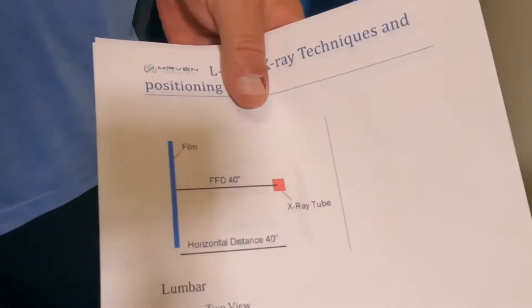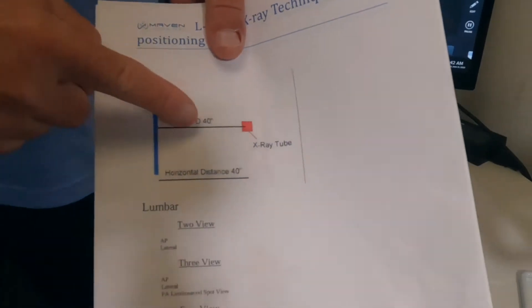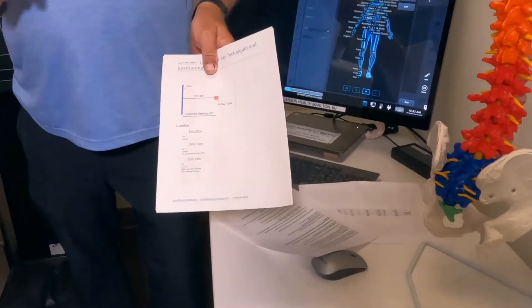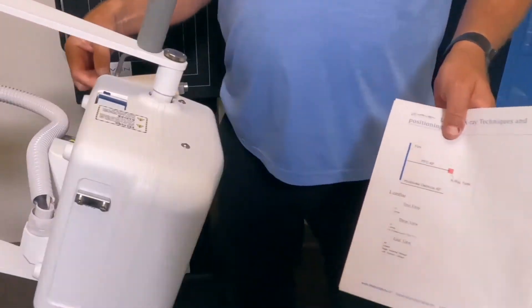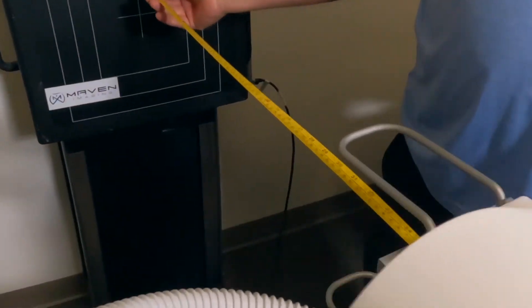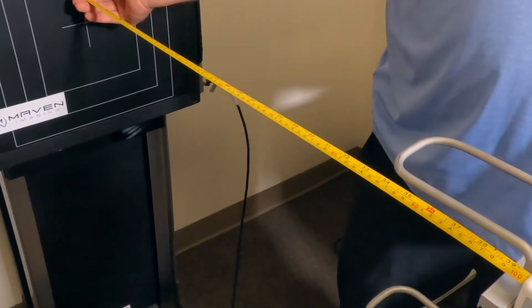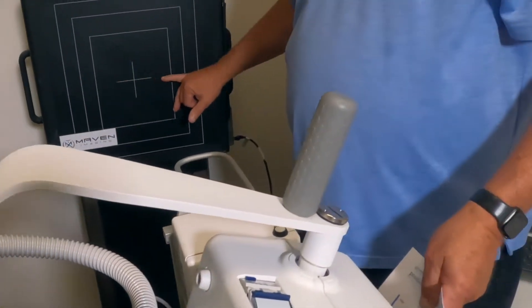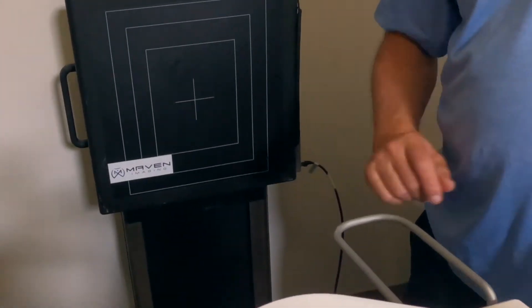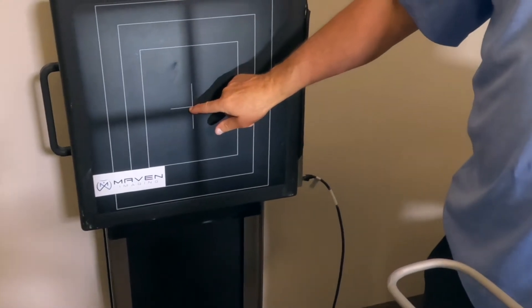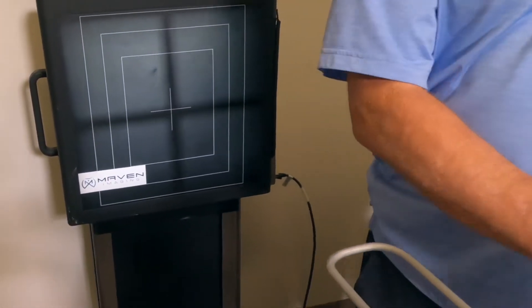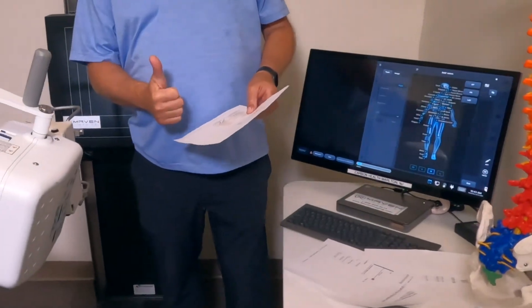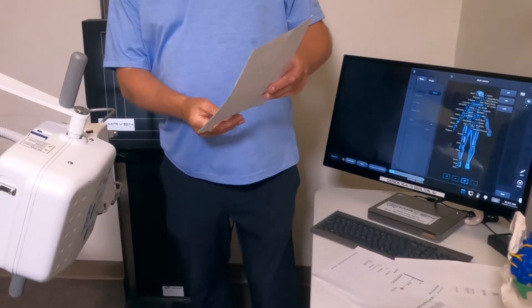To take an L-spine shot, you set the x-ray to be at 40 SID. You take the tape measure and run it to the DR panel at 40 SID. What you do is align this image as you can see with the crosshairs of where we're going to take the shot. We're going to do an AP shot and a lateral shot.